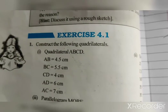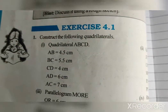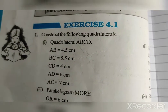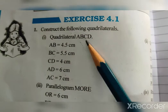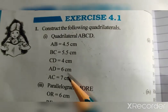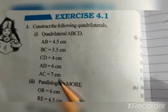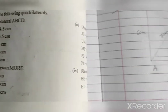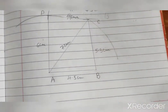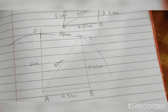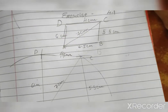Students, let us start now 4.1. Construct the following quadrilaterals: quadrilateral A, B, C, D where all the sides are given. So let us start. What we will do? We will draw first a rough diagram.